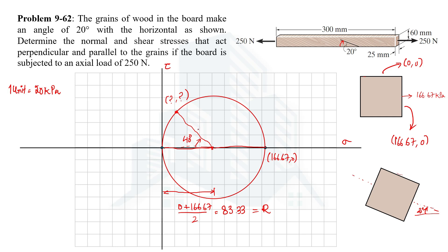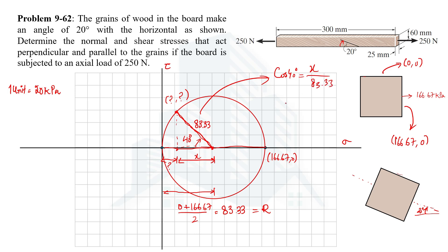Since the radius is 83.33, the distance from the center to the exterior point on the Mohr's circle is also 83.33. To find the normal stress, we project onto the normal stress axis. Using the right-angle triangle, cos 40° equals x divided by the radius 83.33, giving x equal to 63.83. The normal stress at this plane is then 83.33 minus 63.83, which equals 19.5 kPa.